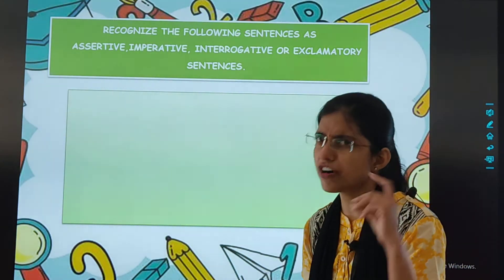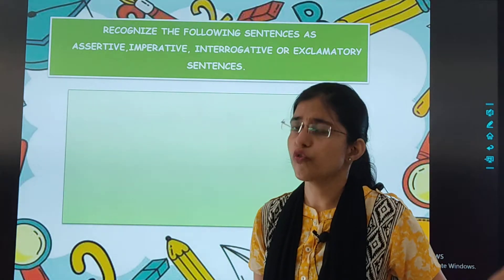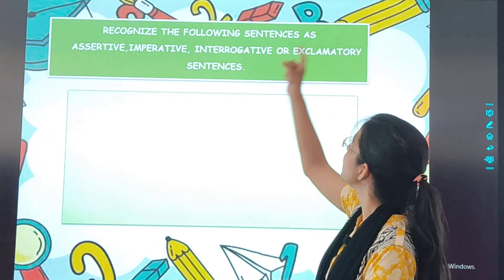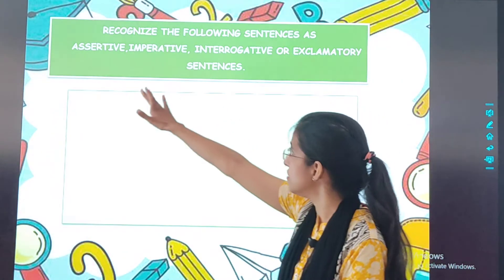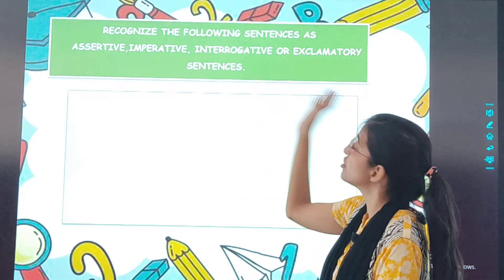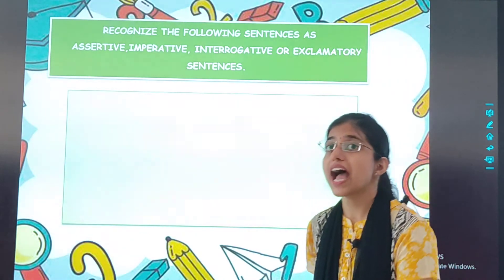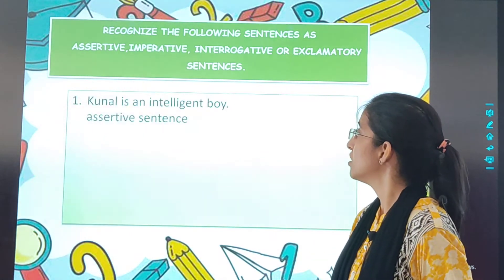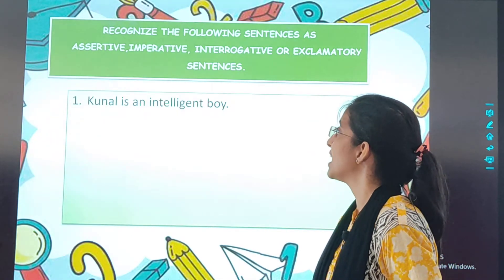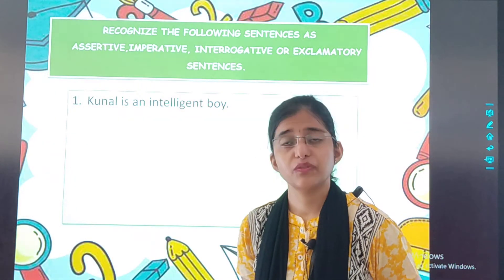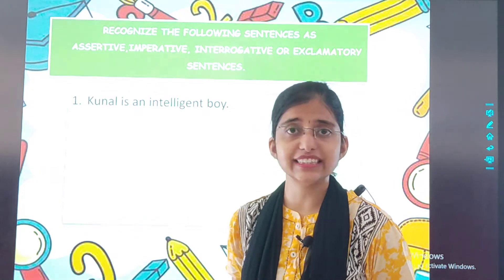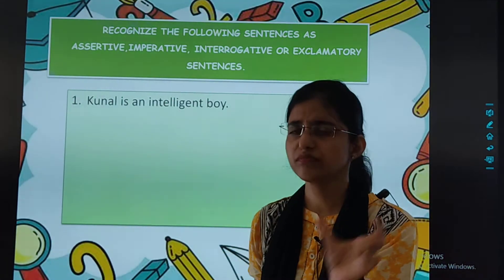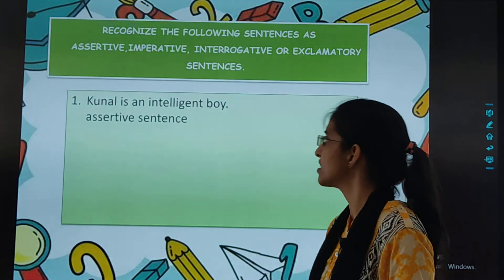Now we will solve a quick exercise based on what we revised. Recognize the following sentences as assertive, imperative, interrogative, or exclamatory. First: 'Canaan is an intelligent boy.' It is a direct statement, so it will be an assertive sentence.